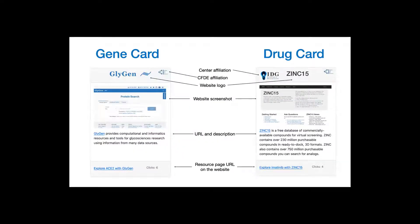The structure of resource cards for genes and drugs is identical. The header of the card displays the resource center affiliation, the website logo, and the CFDE affiliation. The body displays a screenshot of the landing page of the corresponding resource, a short resource description, and a hyperlink to the resource. The footer displays a hyperlink to the page of the gene or drug on the requested resource.